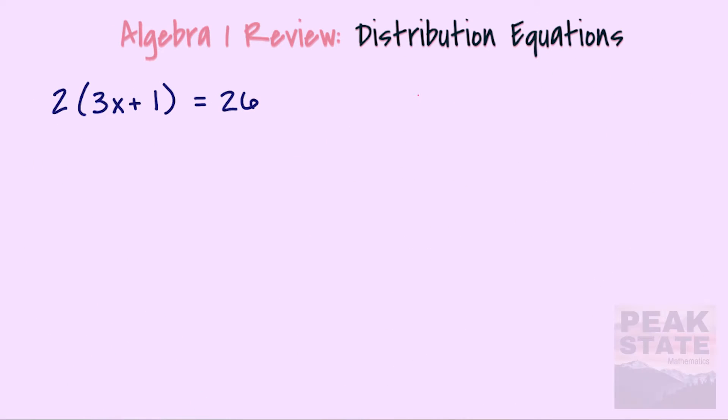Welcome back to Peak State Mathematics. We're taking a look at distribution in equations today, using the distributive property. That just means you're multiplying something into a quantity. In this case, we've got two times the quantity three x plus one. The distributive property says multiply the two by three x and by positive one.